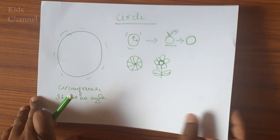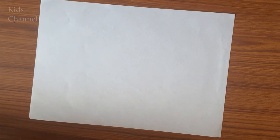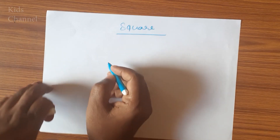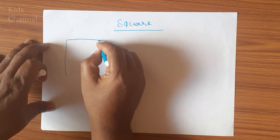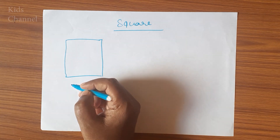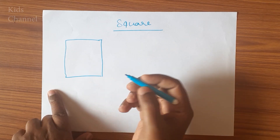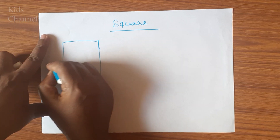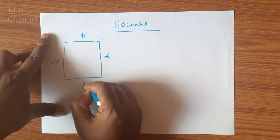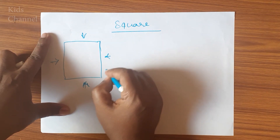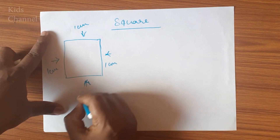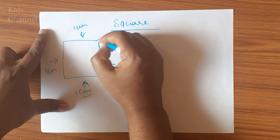Now we will see what you mean by square. A square has four sides and all sides are equal, with four corners. See these sides — all sides are equal. So if this side is 1 cm, then this side is also 1 cm, this side is also 1 cm, and this side is also 1 cm.